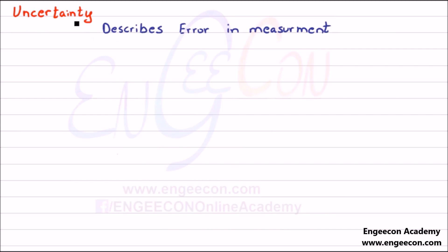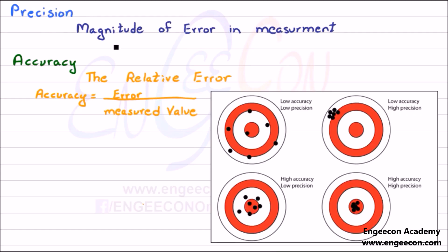Errors give rise to uncertainty, and uncertainty describes error in the measurements. Before going into details, let me define some more terms. Precision is the magnitude of error in measurements, and accuracy is the relative error. Here we have a formula for accuracy: error divided by measured value. Many students are confused between precision and accuracy.